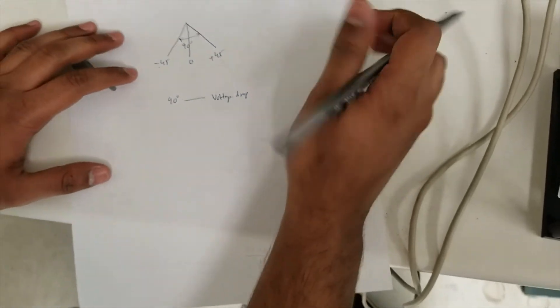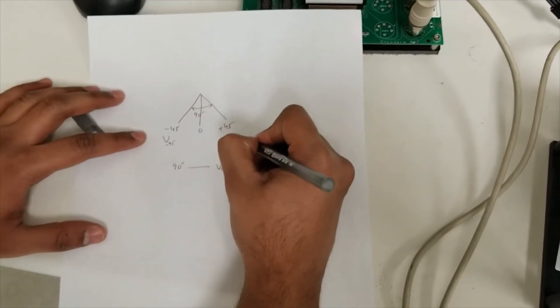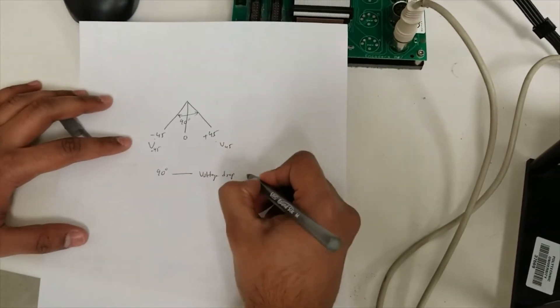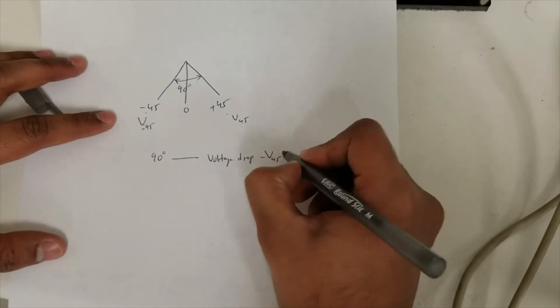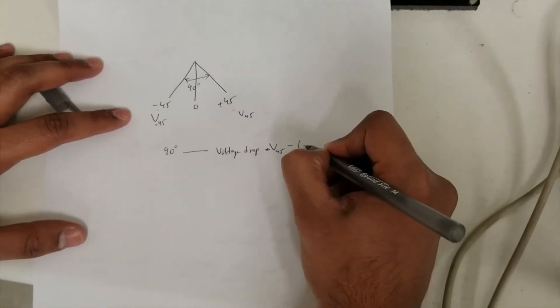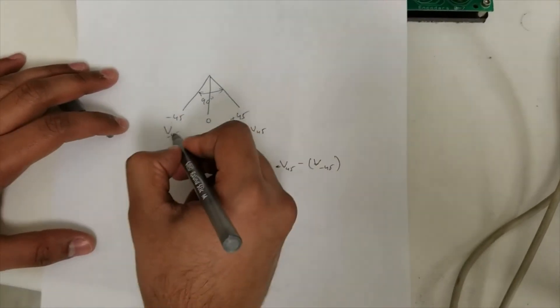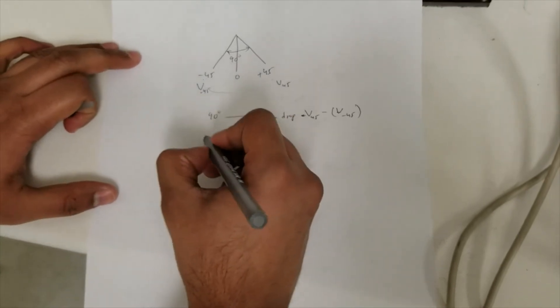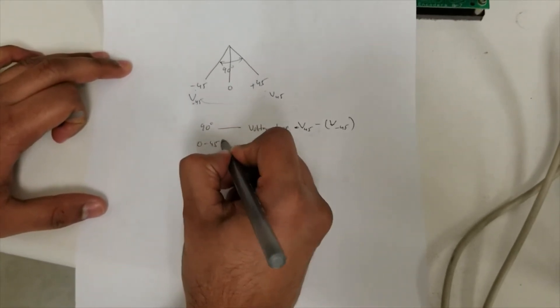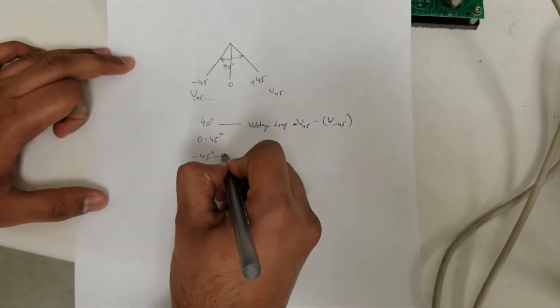You can just get V minus 45 and the voltage drop is V45 minus V minus 45. This is the full range of voltage difference. You can have one range as 0 to 45 degrees and one range as minus 45 degrees to 0 degrees.